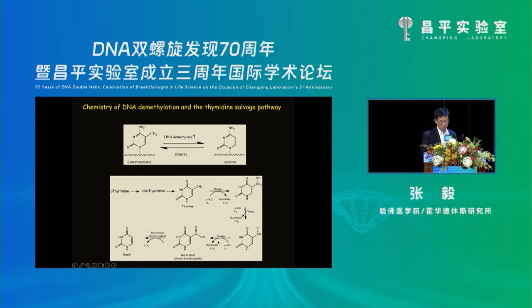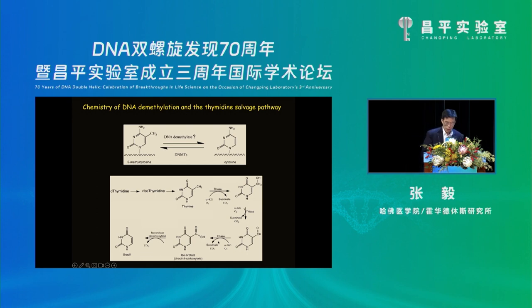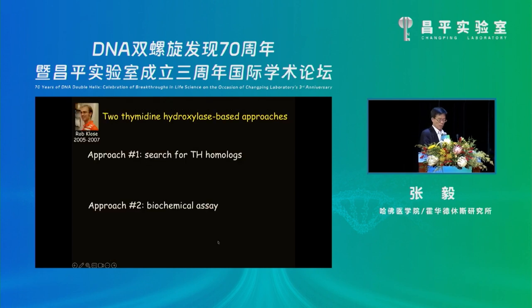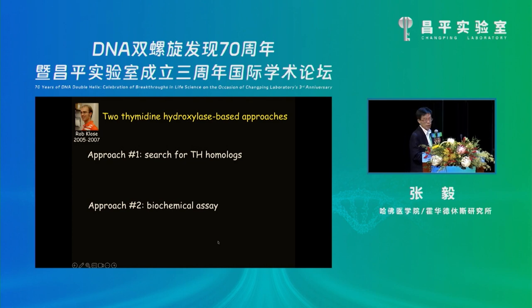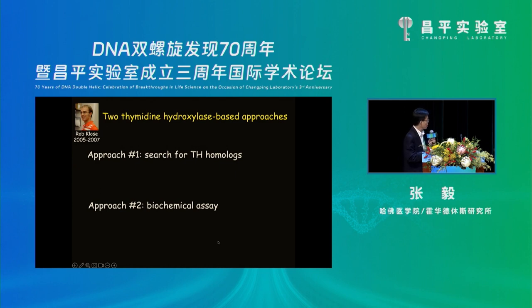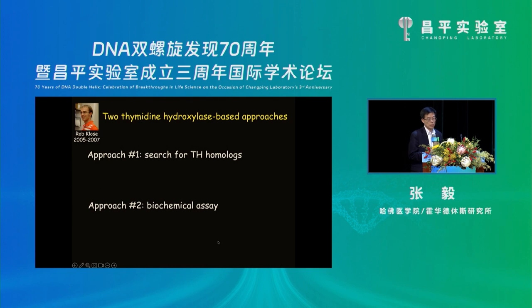If DNA demethylation happens, from a chemistry point of view, it should very likely use this mechanism. Therefore, many years ago, Rob Close came to the lab. I asked him to use two approaches to look for the DNA demethylase. The first was simply searching for a thymine hydroxylase homolog. The other used a biochemical assay, similar to what we used for the identification of Jumongi family proteins, but using DNA rather than histone as a substrate.